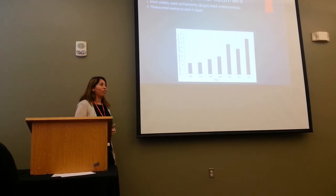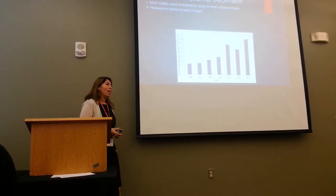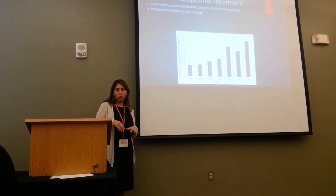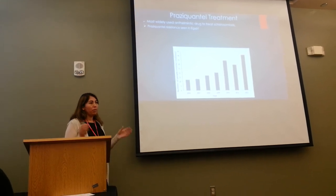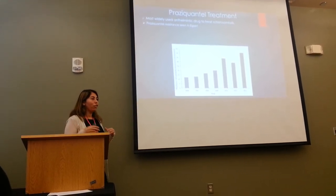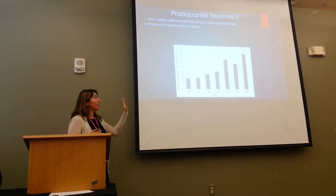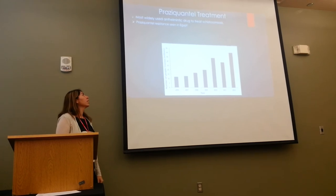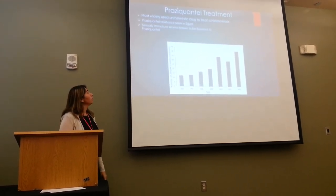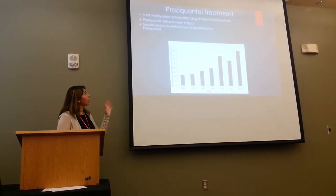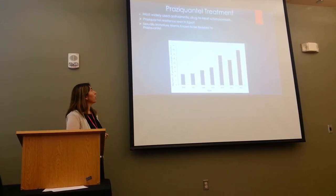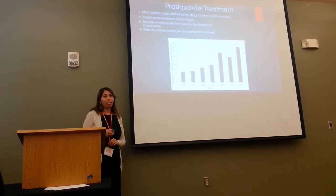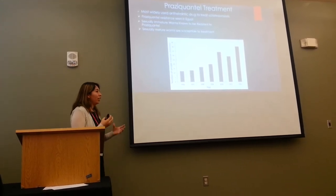Praziquantel is not without its downfalls. It is known to have automatic resistance in juvenile worms of this species. And as with any drug over a prolonged period of time — this has been used for the past 30 years to treat this disease — you can actually see resistance form. Resistance has been seen in Egypt. Sexually immature or juvenile worms are known to be resistant to this drug, but the sexually mature worms are not; they actually can be treated and killed.